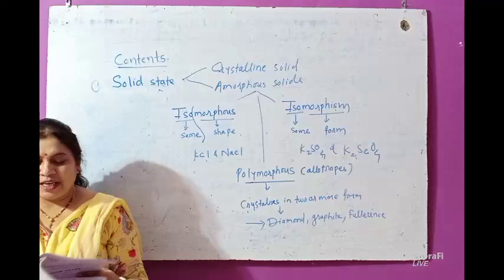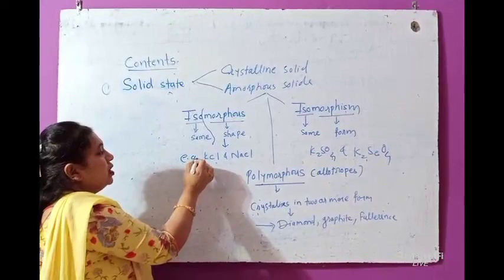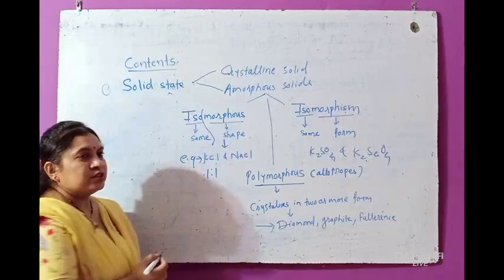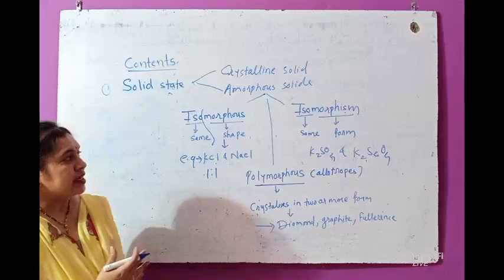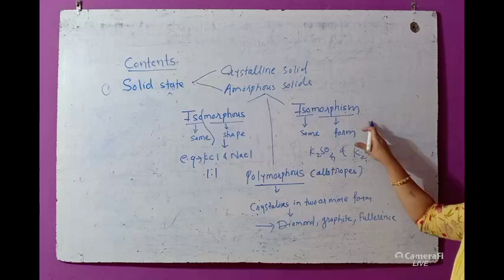When a substance shows the same shape, that is called isomorphous. That is the first property given by the amorphous solid. The second property is isomorphism. Again, 'iso' means the same.